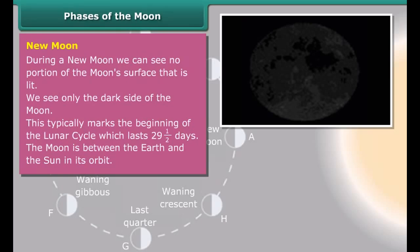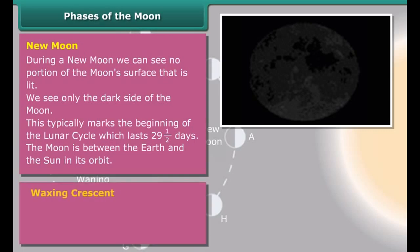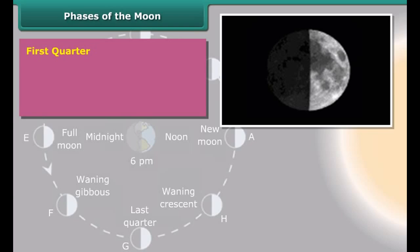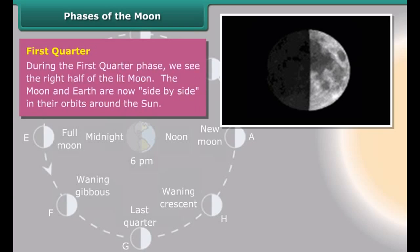The Moon revolves around the Earth and also around the Sun along with the Earth. The Moon completes one revolution around the Earth in 27.3 days. In the meantime, the Earth moves ahead in its orbit. Thus, from the Earth, the Moon appears to complete one revolution between one Moon day and the next in 29.5 days. A lunar eclipse may occur on some full Moon days.